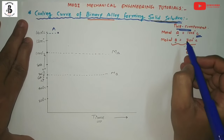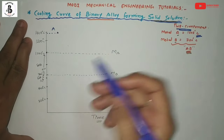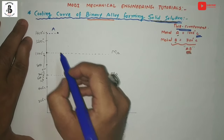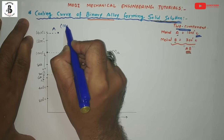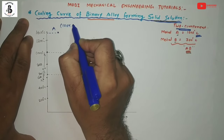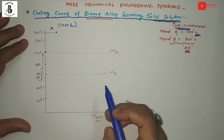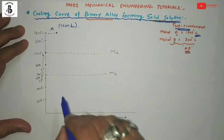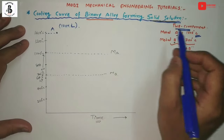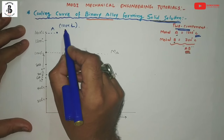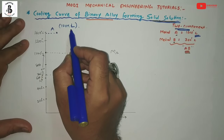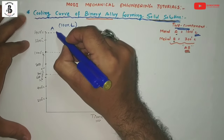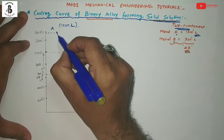In any binary alloy in liquid state, there is 100% solubility. Point A on the cooling curve represents 100% liquid material. For any composition of A or B, the cooling curve follows this pattern. From point A, with slow cooling with respect to time, we trace the cooling of binary metal AB.